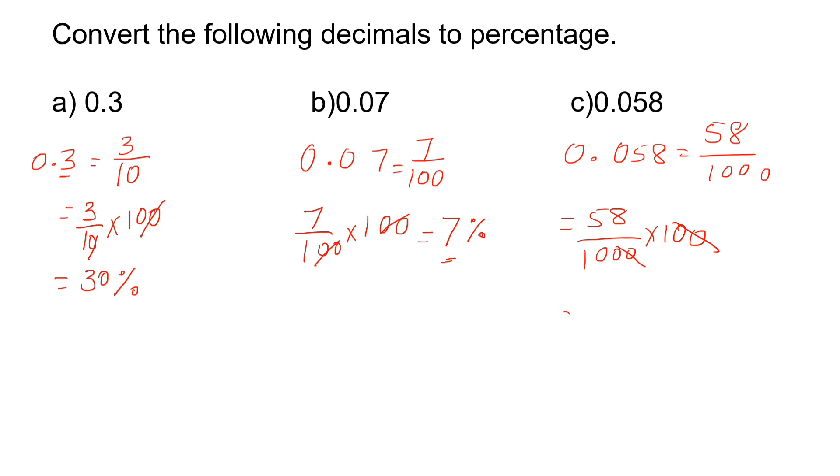Whenever we are dividing any number with 100 or 1000 we know the rule. So here in 10 there is one zero. From the left after one digit we have to place the decimal point. So here it will be 5.8. Then place the percentage sign. So 0.058 is nothing but 5.8%. This is how we can convert the decimal to percentage.